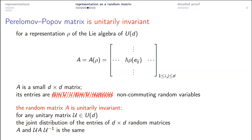Nothing has changed — it is the same matrix — but I have changed the way I look at it: it is a d×d matrix and the entries are non-commuting random variables. With this viewpoint I can say something that already appeared in Roland Speicher's talk — namely, this matrix is unitarily invariant. A matrix is unitarily invariant if conjugating by an arbitrary unitary does not change the joint distribution of its d² entries.